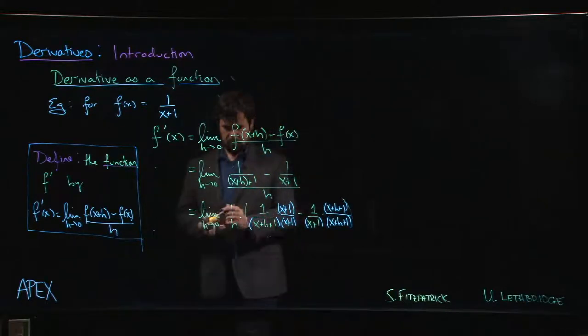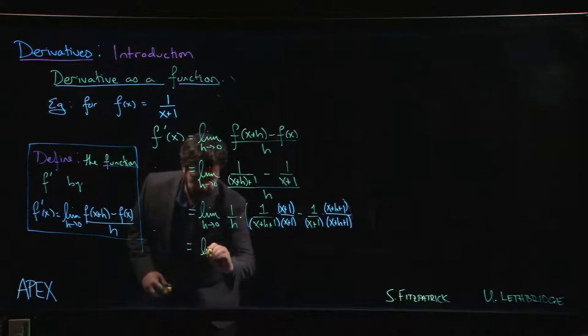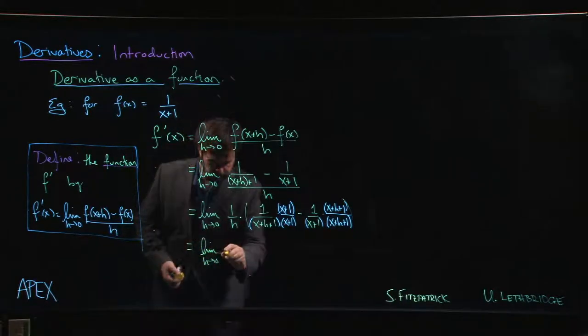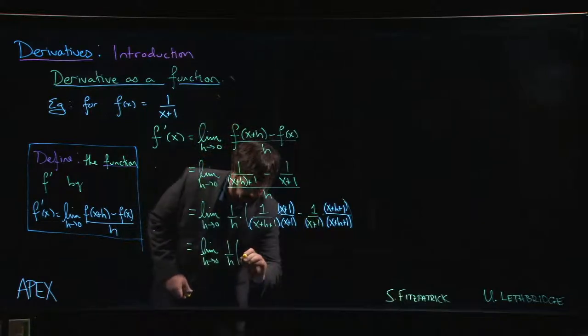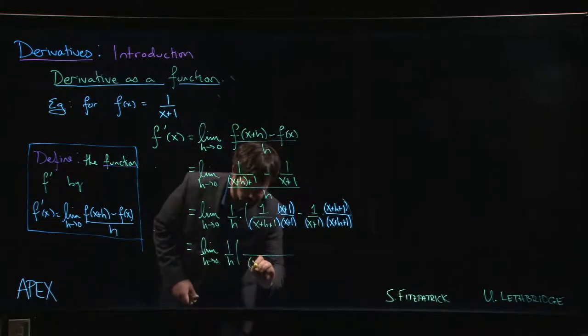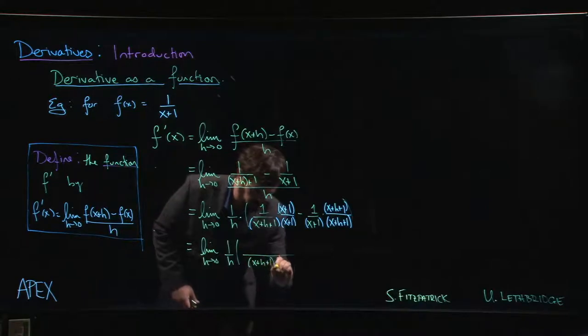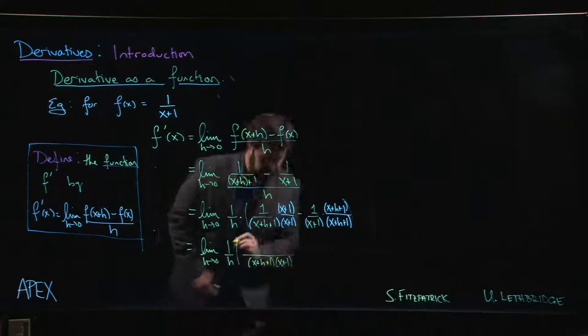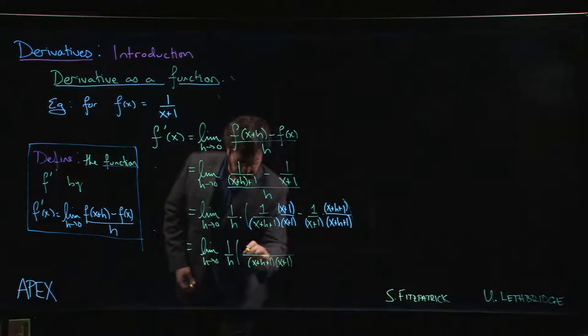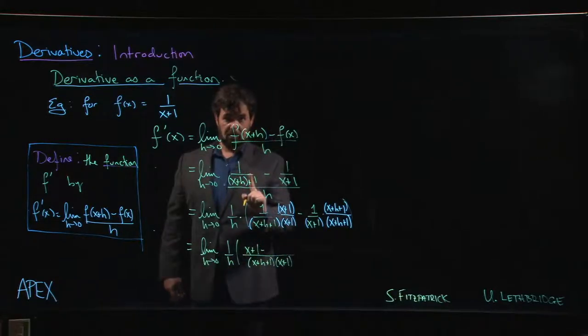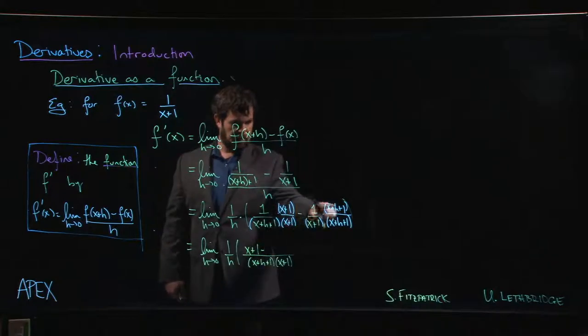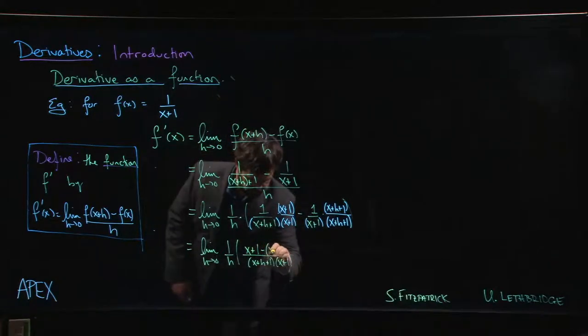Now we're in a position to simplify. As h is going to 0, 1 over h is still out front. Let's get everything over that common denominator. So the common denominator is x plus h plus 1 times x plus 1.